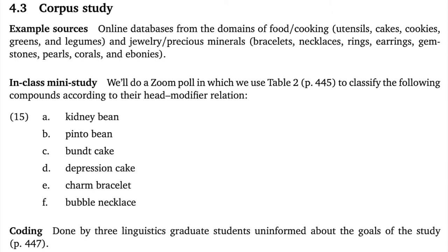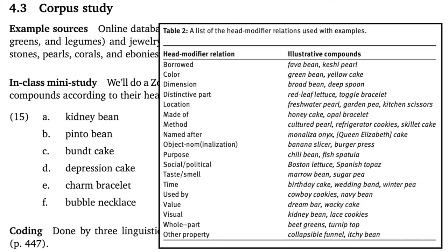So what's it like to do this work? Here I've got a little sample of compounds, and we can use Table 2 as a sort of reference card. Kidney bean — I'd say that's visual. Pinto bean — also visual. Bundt cake — I know that refers to the shape of the pan used to create these cakes, so I'd say that's method. Depression cake is unfamiliar to me; I happen to remember it's associated with the Depression era in the 1930s, but I can easily imagine someone thinking it's about the appearance of the cake.